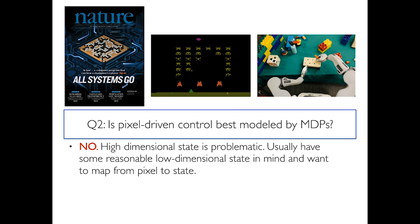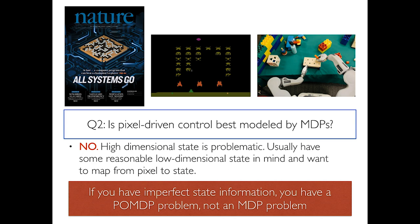So is pixel-driven control actually well modeled by MDPs? I would argue no. For Atari you could take a chain of small pixelated images and make predictions. But for the most part, especially in robotic systems, we know what states are important. The challenging part is actually fusing more complicated sensing modalities with that kind of state representation. As soon as you have imperfect state information, you have a POMDP problem, not an MDP problem. Leslie would go even farther — she would say that if you have a game, that could maybe be an MDP, and everything else is POMDPs.